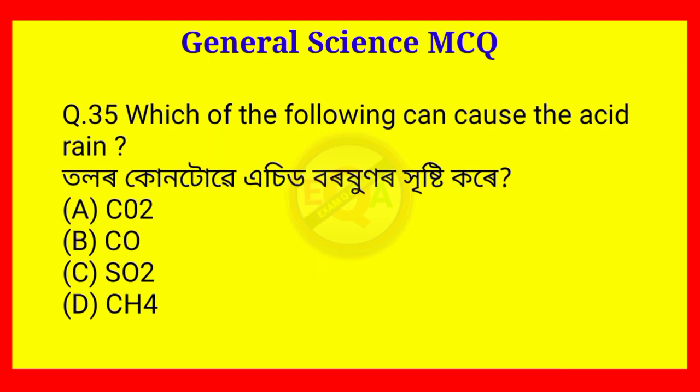Question number 35. Which of the following can cause acid rain? The answer is Option C — Sulfur dioxide (SO2).